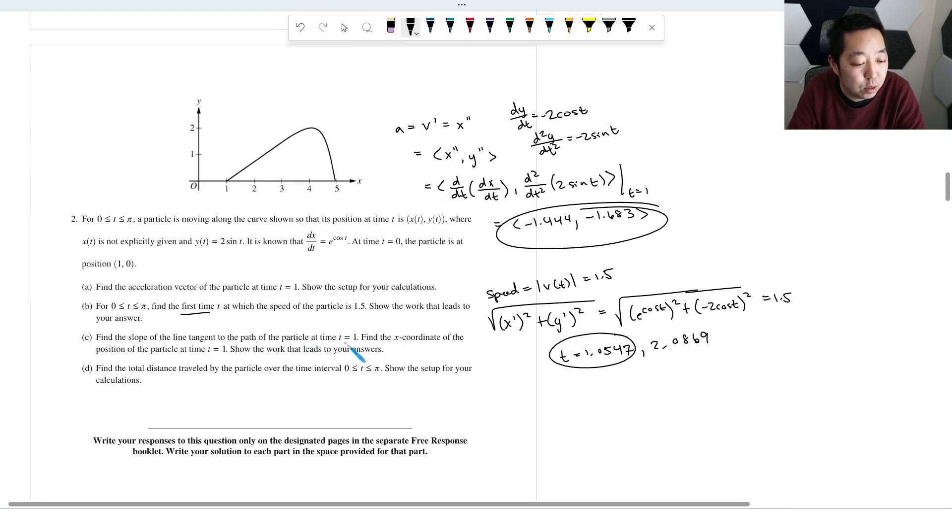Find the slope of the tangent of the path of the particle at t equals one. Find the x coordinates of the position of particle at time t equals one. Show the work for your answer. Okay, slope of the tangent line is basically I want to find dy/dx at t equals one. That's going to be dy/dt over dx/dt at t equals one. So dy/dt is negative two cosine of one, divided by plugging one into this guy, e to the cosine of one.